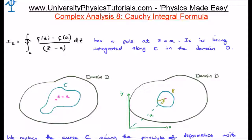We invoke the principle of deformation, and we deform the curve c such that it becomes a circle surrounding the point where the pole is. It has a radius rho, and I'm going to call the circle capital R.